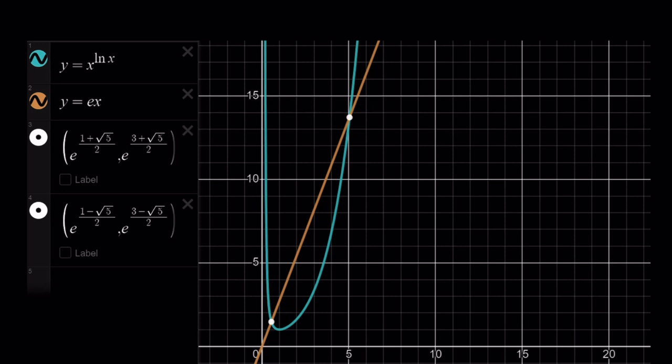And y equals ex is basically a straight line that goes through the origin. And these two graphs, no doubt about it, they're going to intersect at two points. And these are going to be the intersection points, which are the solutions for the original equation.